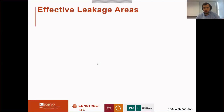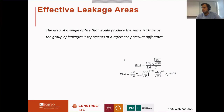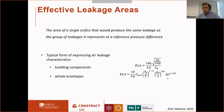Effective leakage areas are obtained from the treatment of air tightness measurements. It represents the area of a single orifice that produces the same leakage as a group of leakages at the reference pressure difference. It is dependent on the airflow, the pressure difference, the temperature or air density, and the discharge efficiency. Normally it is the form of expressing leakage characteristics of building components or even whole envelopes.